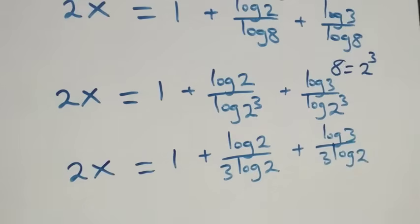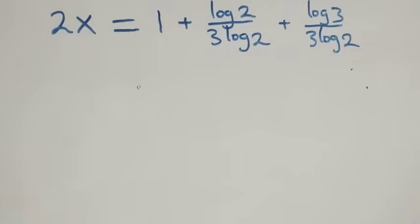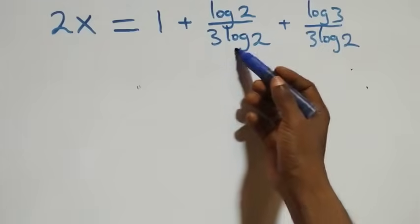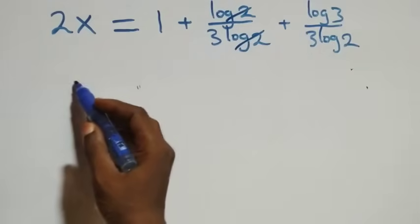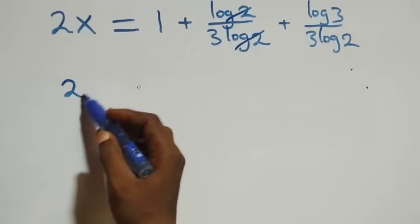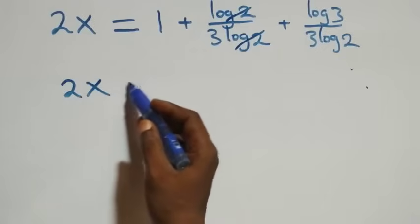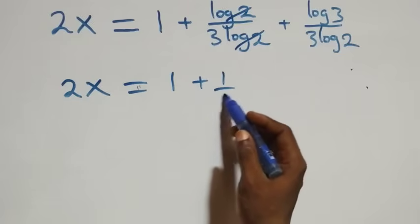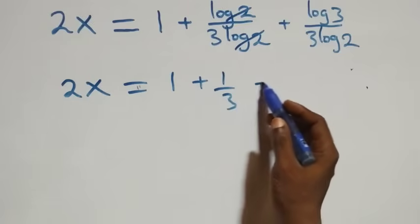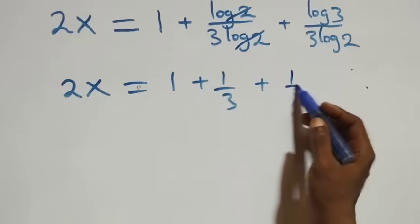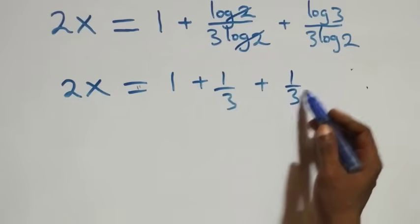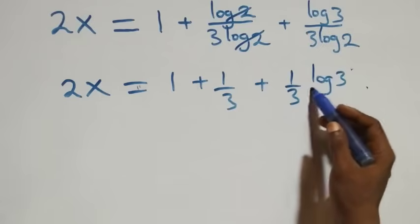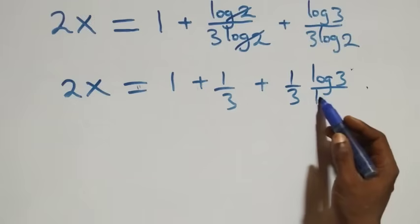From here, log 2 cancels in the first fraction leaving 1/3. So 2x equals 1 plus 1/3, then plus — and the remaining term can be written as (1/3)·(log 3 over log 2).